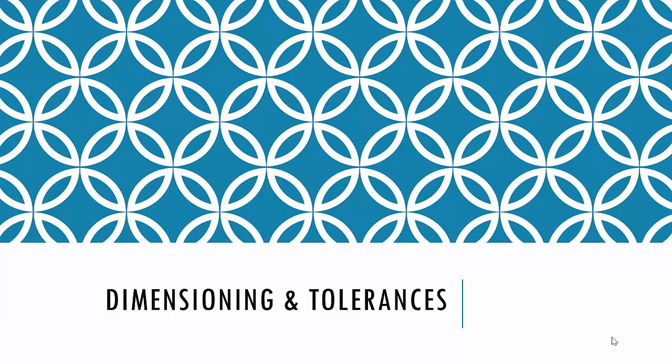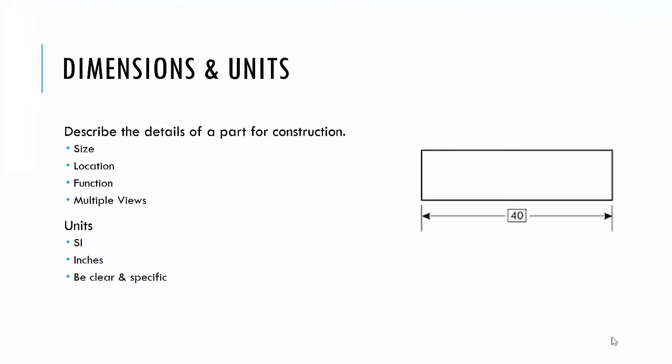We're going to start by talking about dimensioning and tolerances. When we talk about dimensions and units, they're used to describe the details of a part for construction. They give us the size, the location, the function. There can be multiple views.